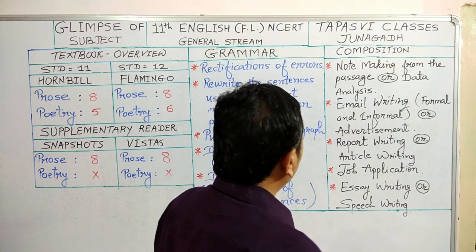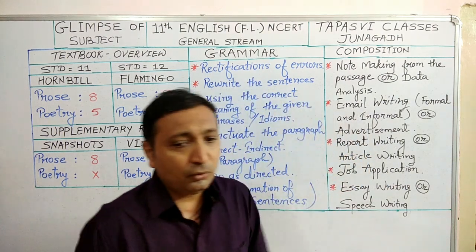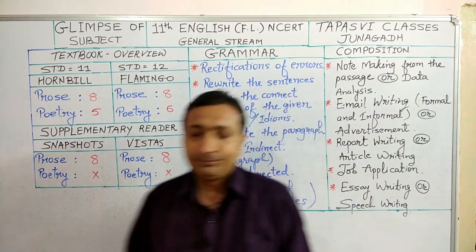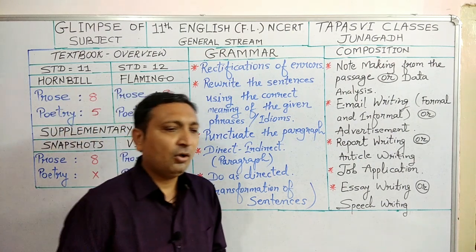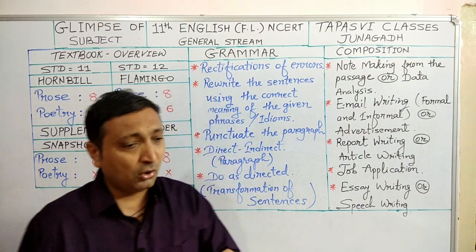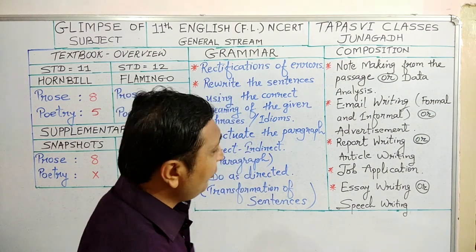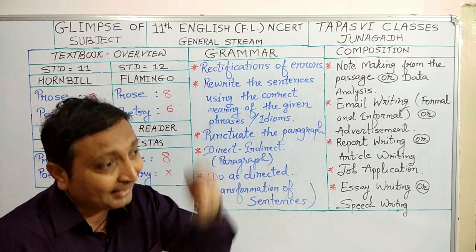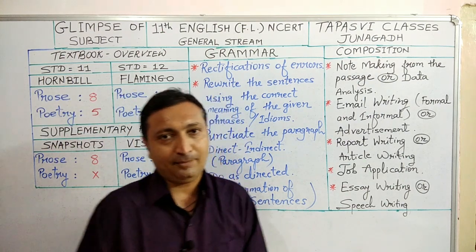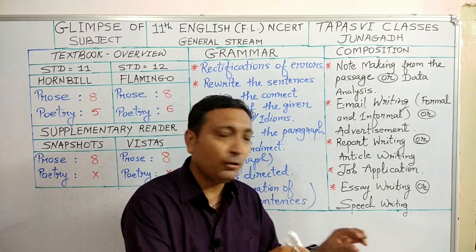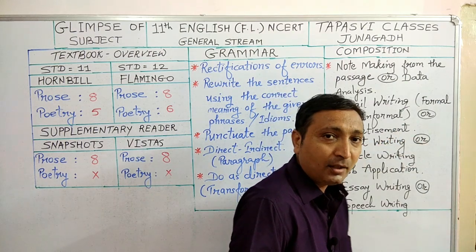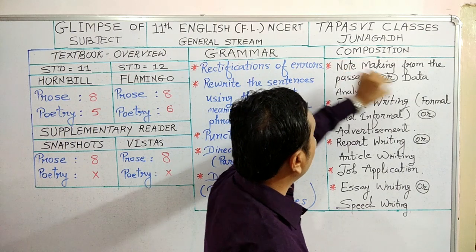In the place of note making, you also have data analysis. In data analysis, in the paper you are given maybe a graph, a chart, a diagram, or something like that. Some information is given through the diagram or graph. What you need to do is gather information from that graph — what the graph wants to suggest to you, what the diagram wants to tell you. What are the main points in that diagram, and write it down in your own words with sentences, just like eight or ten sentences. So note making and data analysis can appear in place of each other.